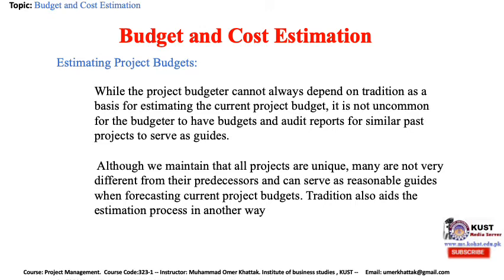One aspect of cost estimation and budgeting not often discussed has to do with the actual use of resources as opposed to the accounting department's assumptions about how and when resources will be used. For instance, presume you have estimated that $5,000 of a given resource will be used in a task estimated to require 5 weeks. The actual use may be none in the first week, $3,000 in the second, none in the third, $1,500 in the fourth, and the remaining $500 in the last week. Unless this pattern is detailed in the plan, the accounting department — which takes a linear view — will spread the expenditure equally over the 5-week period. This may not affect the project's budget but it most certainly affects the project's cash flow.